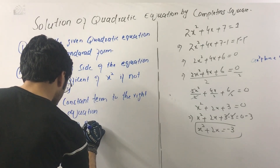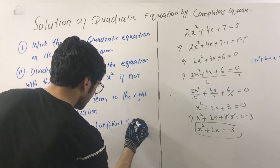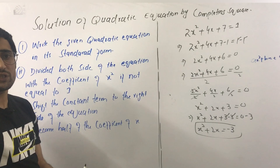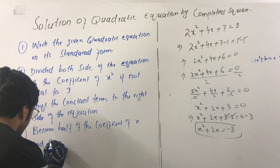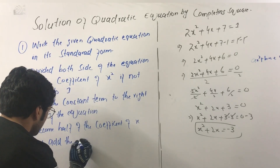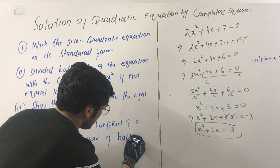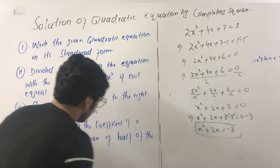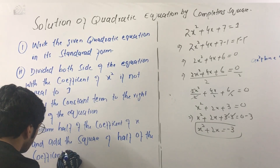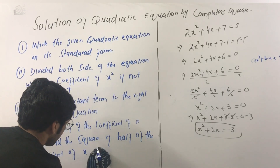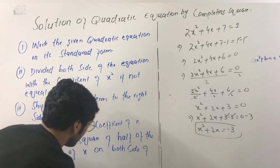Take half of the coefficient of x. The coefficient of x equals half. Then square that half value, and add the square of half of the coefficient of x to both sides of the equation.